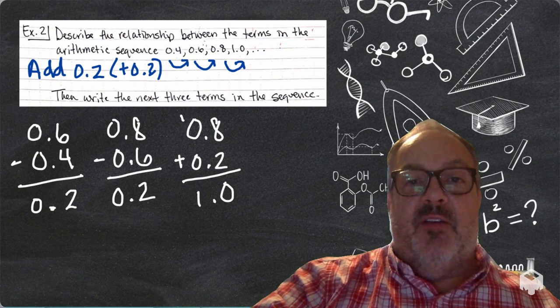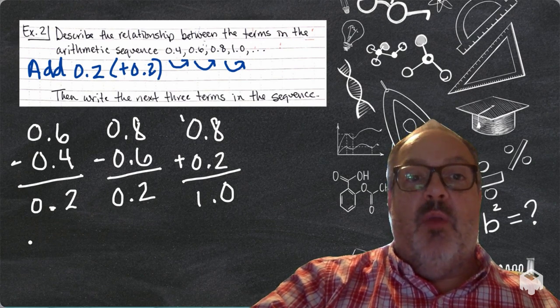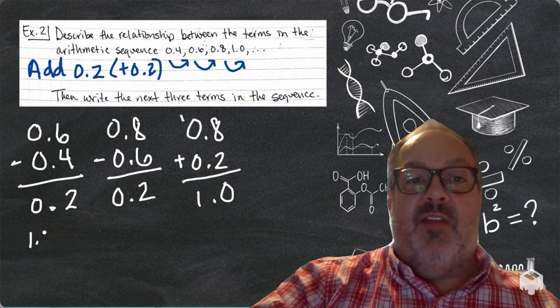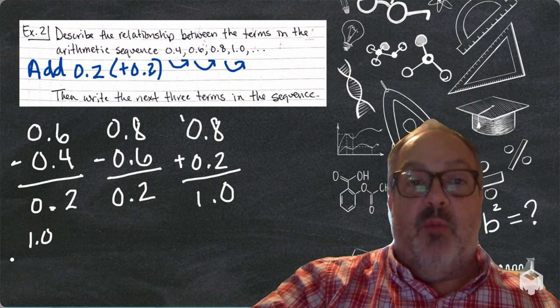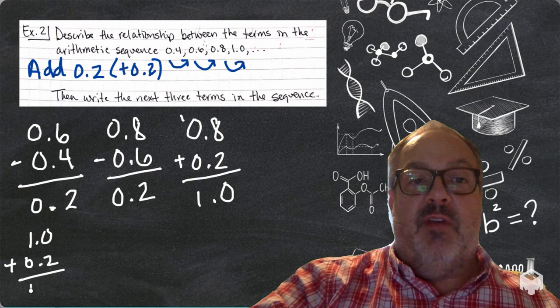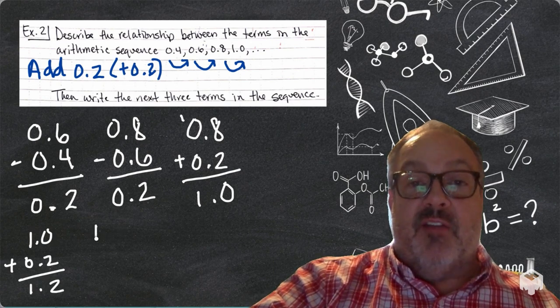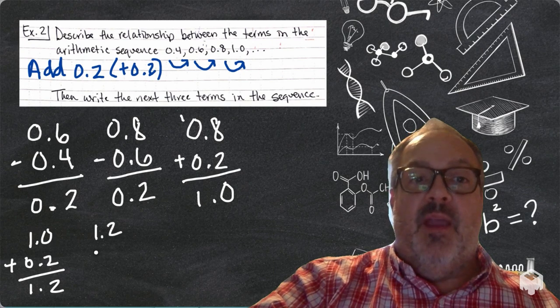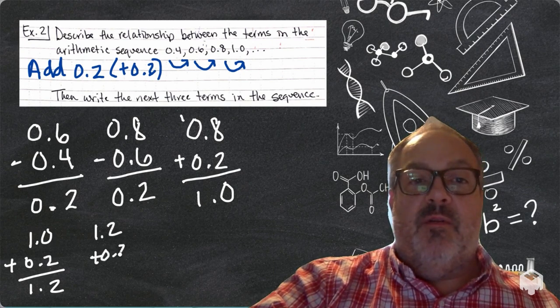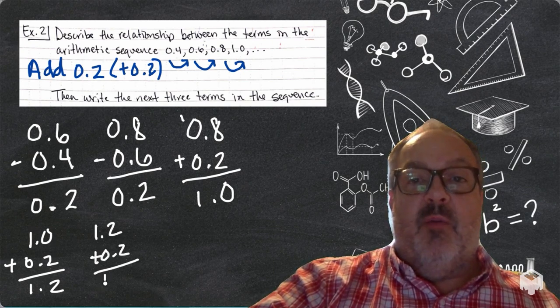So, I now know that the relationship between the terms in the arithmetic sequence is to add 0.2. Now, what I need to do is I need to figure out what the next three terms are in the sequence. So, I'm going to start at 1.0, and I'm going to add 0.2. So, I'll get 1.2, then I'll start at 1.2, add 0.2, and I'll get 1.4.